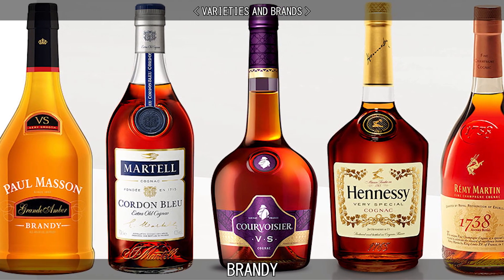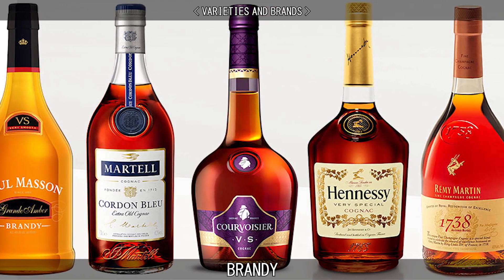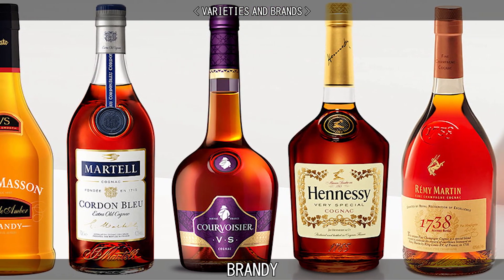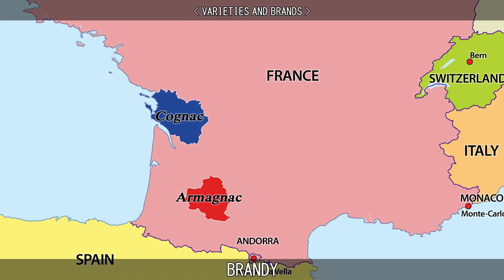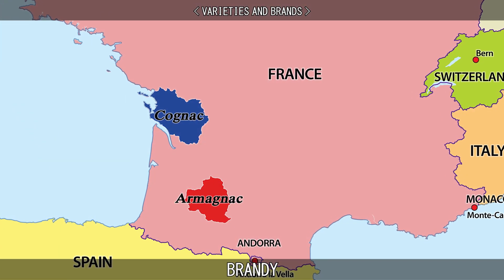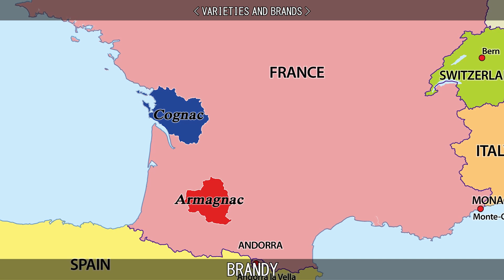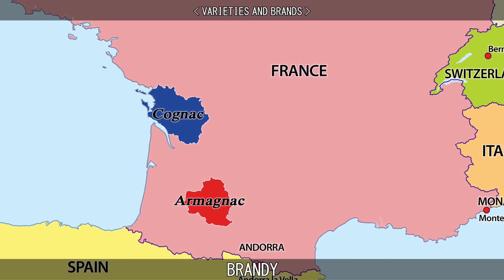Well-known brandies such as Armagnac and Cognac are named after the regions in which they are made. Armagnac is made from grapes of the Armagnac region in the south-west of France, while Cognac comes from the Cognac region of France.